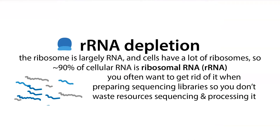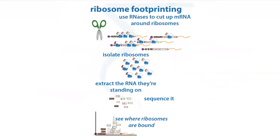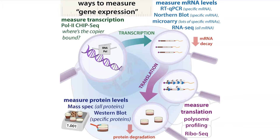Things can be even worse with ribosome profiling, also known as footprinting or riboseq, where you isolate ribosome-bound fragments. You pause the ribosomes along the mRNAs, use nuclease to digest the surrounding RNA, and the RNA the ribosome sits on is protected. You then sequence those protected fragments to learn what was being translated. But here you're enriching for ribosomes, so most of your RNA will be ribosomal — and the small fragments you care about are a minority.